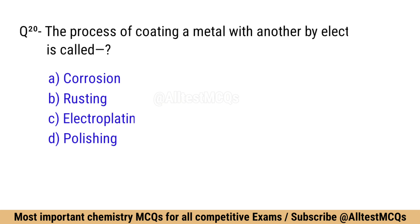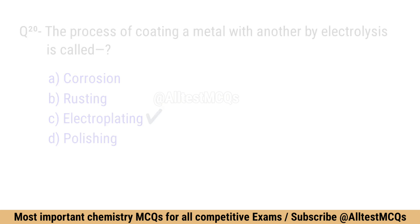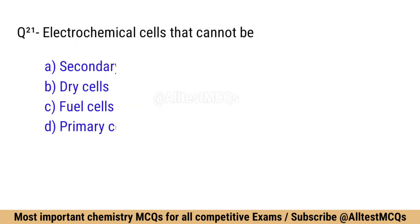Question number 20: The process of coating a metal with another by electrolysis is called? Correct option is C: Electroplating.